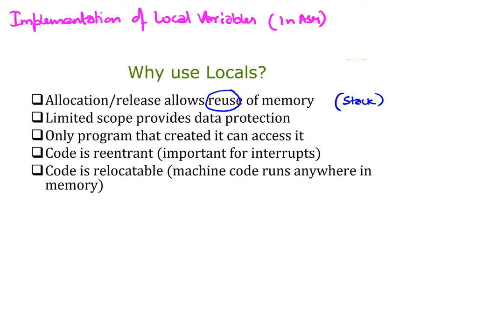Limited scope provides data protection. If I have a function and I declare a local variable inside it — say uint8_t — we know that it has a scope which limits itself to that function, meaning it cannot be accessed anywhere outside. This provides a way of protecting data from being accessed elsewhere. Only the function that created it can access it.